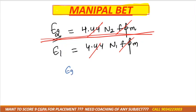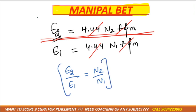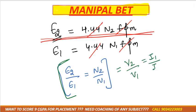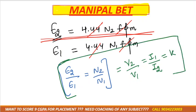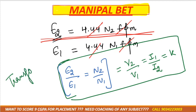Dividing these, we get: E2/E1 = N2/N1 = V2/V1 = I1/I2 = K, where K is the transformation ratio.